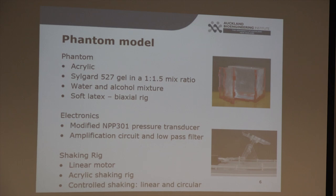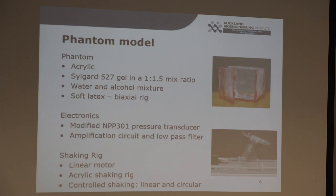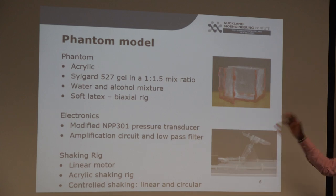The fluid was a mixture of water and alcohol, chosen to match the density of the gel so it would be neutrally buoyant. The soft latex was pre-stretched using a biaxial rig and placed on top of the phantom. The phantoms were instrumented with pressure transducers — an MPP 301 pressure transducer was used — along with amplification circuitry and low-pass filters. A shaking rig was set up using a linear motor, some LabVIEW code, and laser cutting. It could perform controlled repetitive linear shakes or arc shakes about a pivot.